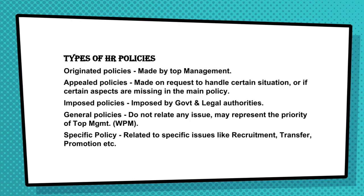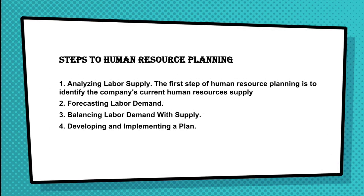Finally, specific policies are based upon transfer, promotion, or recruitment — anything relating to specific issues or formulating policies. The steps in human resource planning are four: first, analyzing the labor supply, which means identifying the company's current human resources. Second, forecasting the labor demand. Third, bridging the gap between demand and supply of workers. Fourth, developing and implementing a plan for human resources.